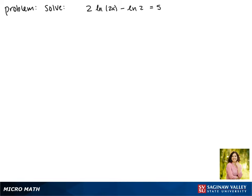Today we'll be solving the equation 2 times the natural log of 2x minus the natural log of 2 equals 5.